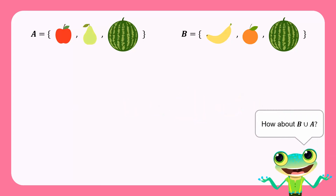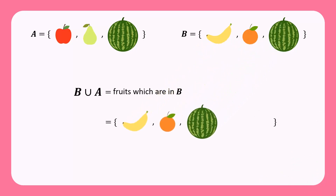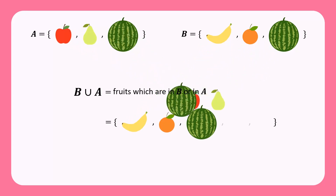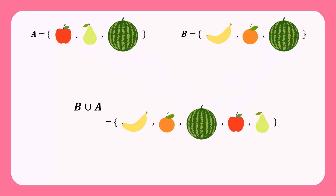How about B union A? B union A is a set consisting of all the fruits that are in set B, or in set A, or in both sets A and B. So B union A consists of bananas, oranges, watermelons, apples, and beers.